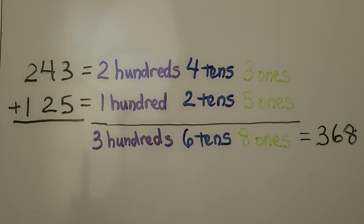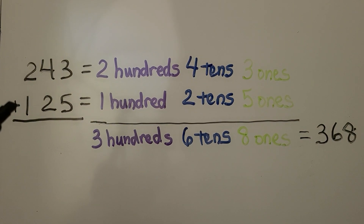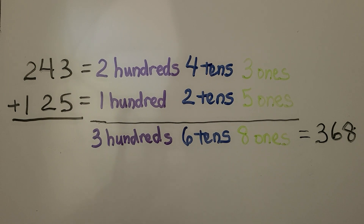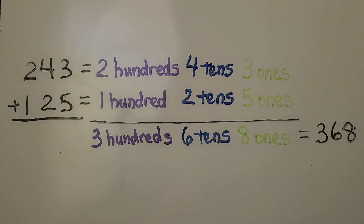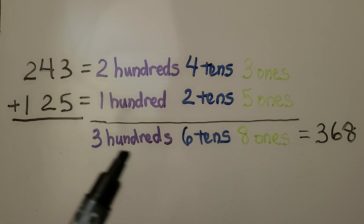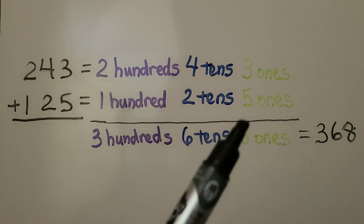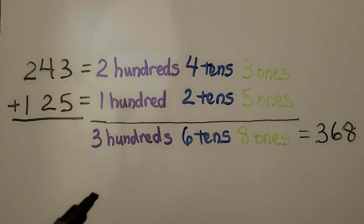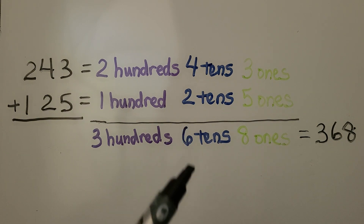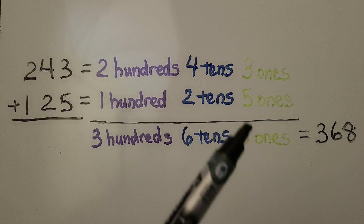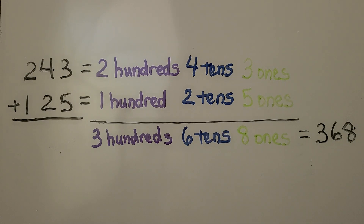If we need to add 243 plus 125, we think of 243 as 2 hundreds, 4 tens, 3 ones. We think of 125 as 1 hundred, 2 tens, 5 ones. We add the hundreds — 3 hundreds. We add the tens — 6 tens. We add the ones — 8 ones. We have 368.